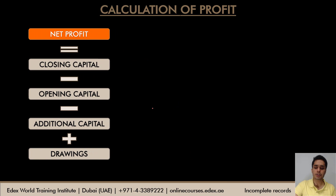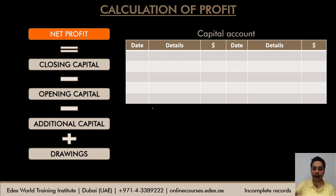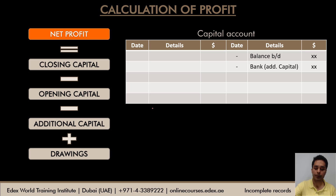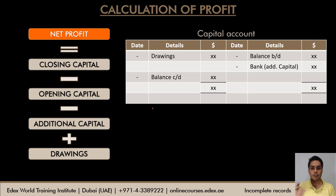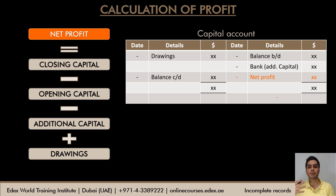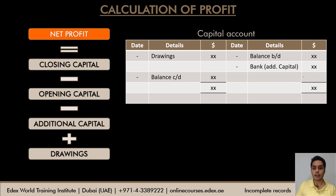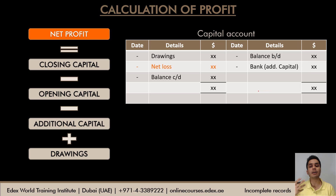The same concept can be understood through a capital account. The opening balance appears as balance brought down on the credit side; additional capital invested is also on the credit side. Drawings and the closing balance carried down are on the debit side. If the debit side total is greater than the credit side, there is a profit — the difference between debit and credit gives net profit. If the credit side is greater, the difference gives a net loss.